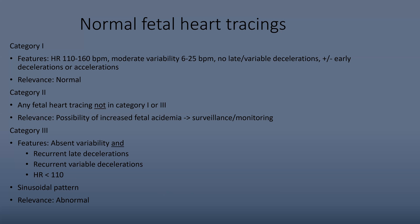Category one is totally normal and no action needs to be taken. Category two is relatively simple for NBME exams — they want you to know it's not category one or three and that there's a potential increased risk of fetal acidemia, so you need to monitor closely to see if it progresses to category three. Category three includes absent variability plus one of: recurrent late decelerations, recurrent variable decelerations, or heart rate less than 110 (fetal bradycardia). A sinusoidal pattern by itself is also category three, often indicating fetal anemia. All of these are considered abnormal.